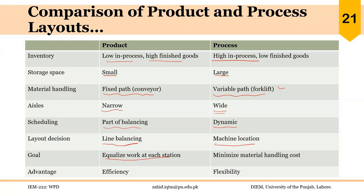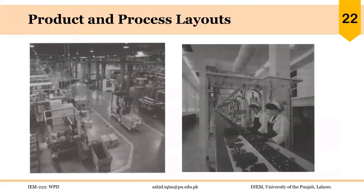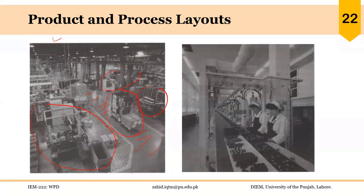In product layout, in-process inventory is low and finished goods inventory is high — the opposite is true in process layout. Storage space is small along the assembly line in product layout but large on the production floor in process layout. Material follows a fixed path on a conveyor in product layout but the path is variable in process layout and backtracking is possible. Aisles are narrow in product layout and wide in process layout. The basic advantage of product layout is efficiency and high uptime, while the basic advantage of process layout is flexibility.